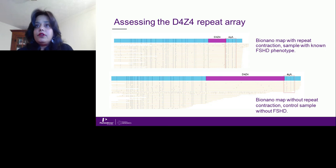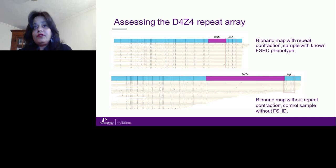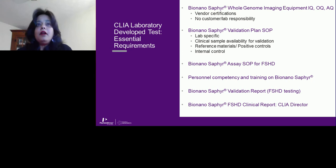In the bottom image, this is the BioNano map without repeat contraction — a control sample without FSHD with the 4QA haplotype, with the D4Z4 repeat shown in purple. In the top image, the repeat contraction — that purple rectangle — is from a known sample with the FSHD phenotype. It is visually very clear, and we can actually map the number of repeats based on size.